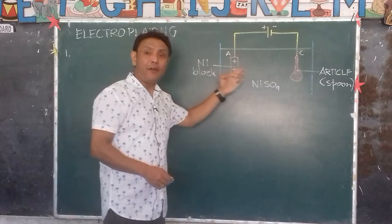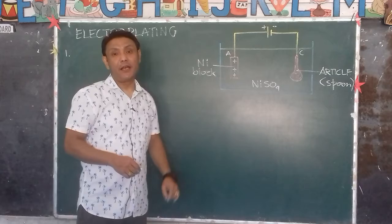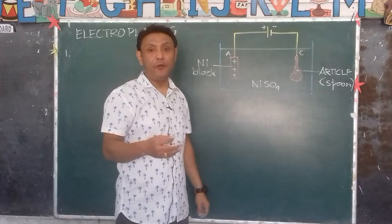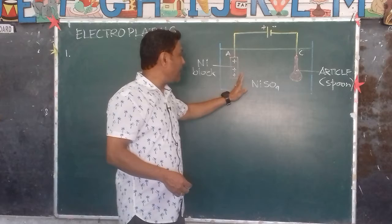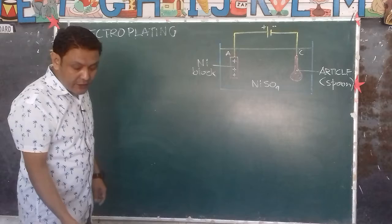A low current is used for a long period of time. If a higher current is used, the rate of deposition will be very fast and the deposition will not be smooth. So we use a very low current so the electrolytic process is slow, ensuring even deposition on the article.